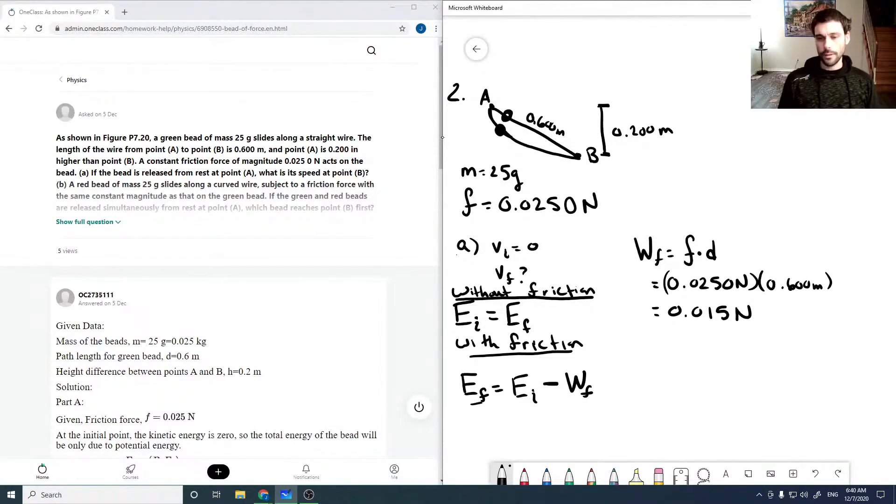Now we need to fill in kind of these other terms. So our initial energy is just our gravitational energy, so it's going to be MGH. Choosing the 0 of gravitational energy at B.